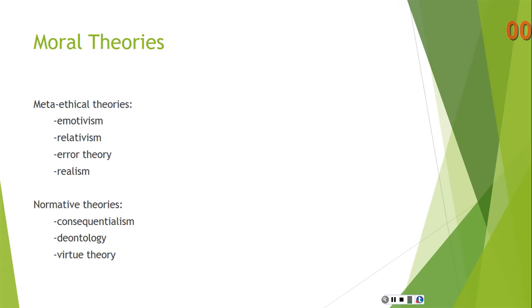A meta-ethical theory is a theory that looks at the nature of moral statements. We saw that emotivism says that no moral statements are true, no moral statements are false — they're incapable of being true or false; they really just boil down to emotional reactions. For relativism, the thing that determines the truth of a moral statement is society. So if a society believes that killing is right, then killing is right, at least for that society.